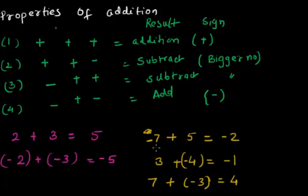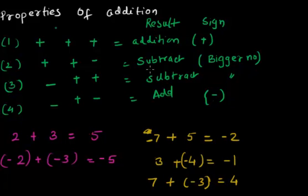So whenever you add two different types of terms — one positive and one negative — you need to subtract and put the sign of the bigger number. Whenever they are of the same type, you add them and put the sign of that same type.